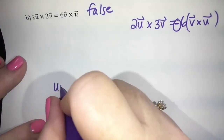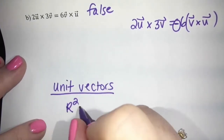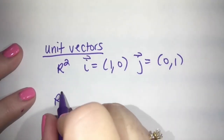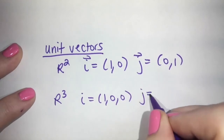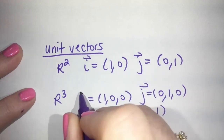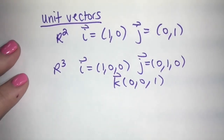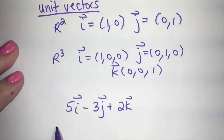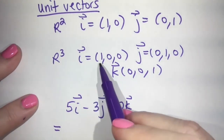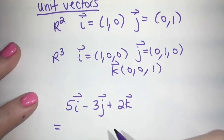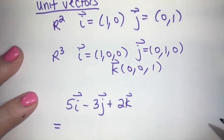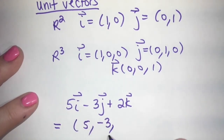One more thing: unit vectors. In R2, the unit vectors are i = (1, 0) and j = (0, 1). In R3, the unit vectors are i = (1, 0, 0), j = (0, 1, 0), and k = (0, 0, 1). So if they give you something like 5i minus 3j plus 2k, multiplying 5 by i gives 5 in the first spot, negative 3 by j gives negative 3 in the middle, and 2 by k gives 2 at the end. So 5i minus 3j plus 2k corresponds to the vector (5, -3, 2).